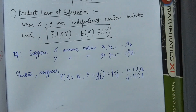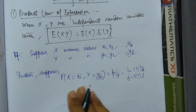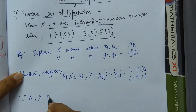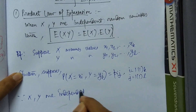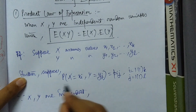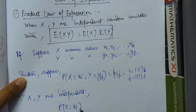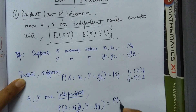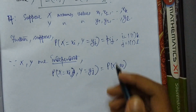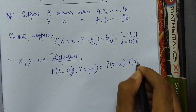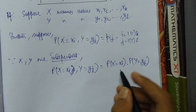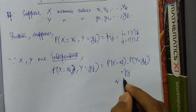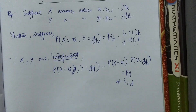Now, since X and Y are independent, we have P(X = xi, Y = yj) which can be written separately as P(X = xi) times P(Y = yj). This equals p_ij for all i and j, where i runs from 1 to k and j runs from 1 to l.